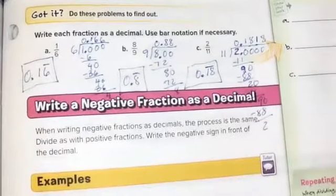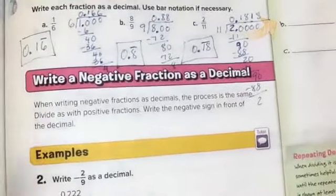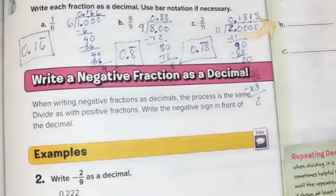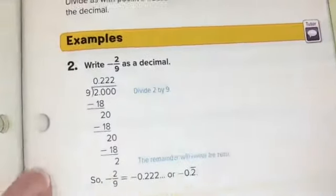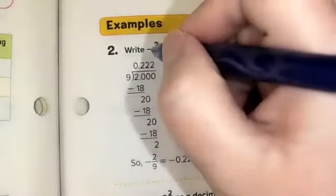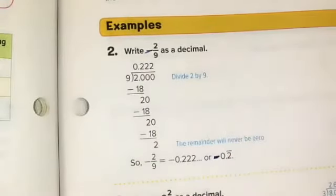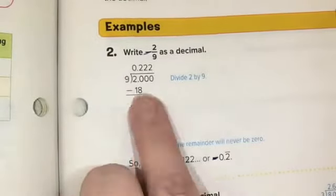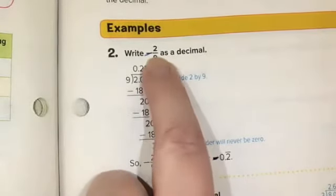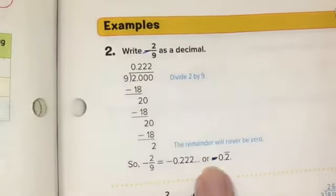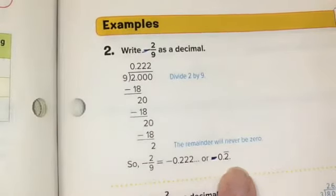The second skill is writing a negative fraction as a decimal. When writing negative fractions as decimals, the process is exactly the same: divide with positive fractions and then add the negative sign back in at the end. For example, to write negative two ninths as a decimal, we just ignore the negative sign for working purposes and then add it back in at the very end. We use the same process as writing two ninths — two divided by nine — and we see it's going to be 0.2 repeating. Then we simply add that negative sign in at the end: negative 0.2 bar.